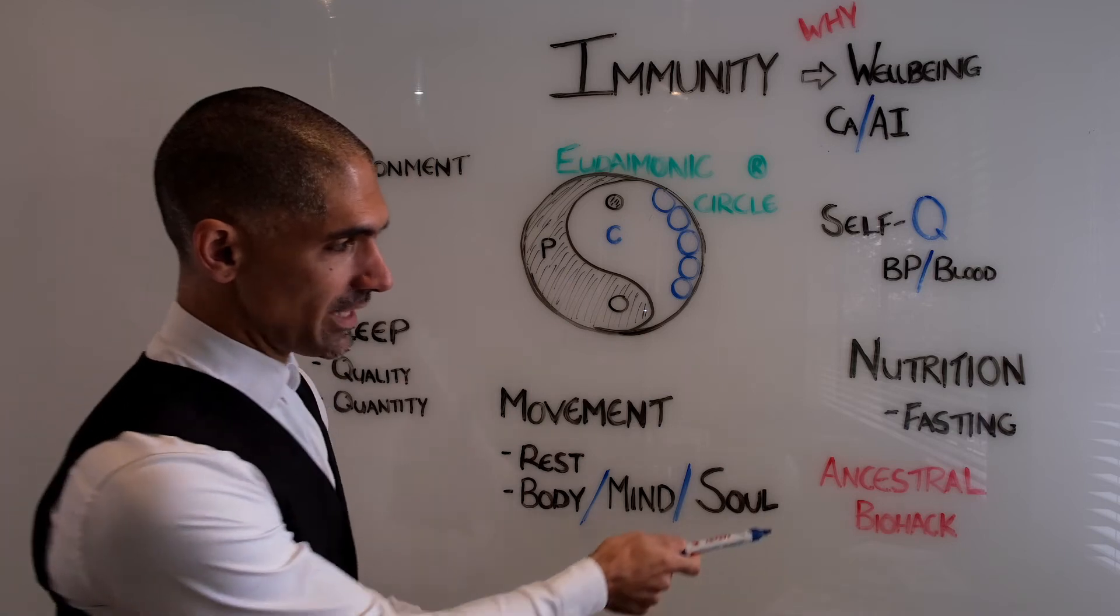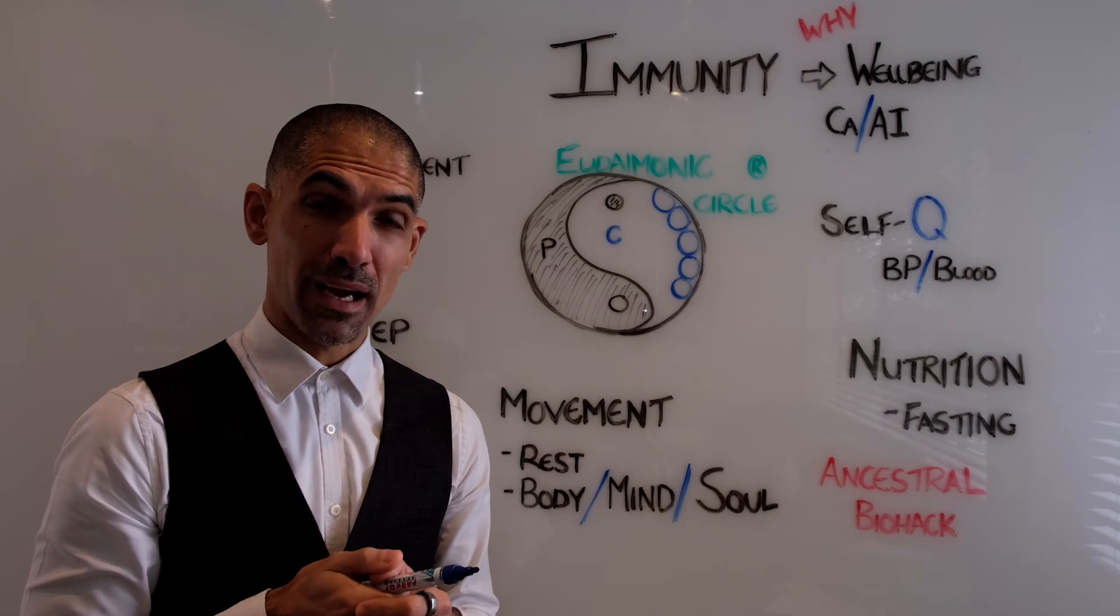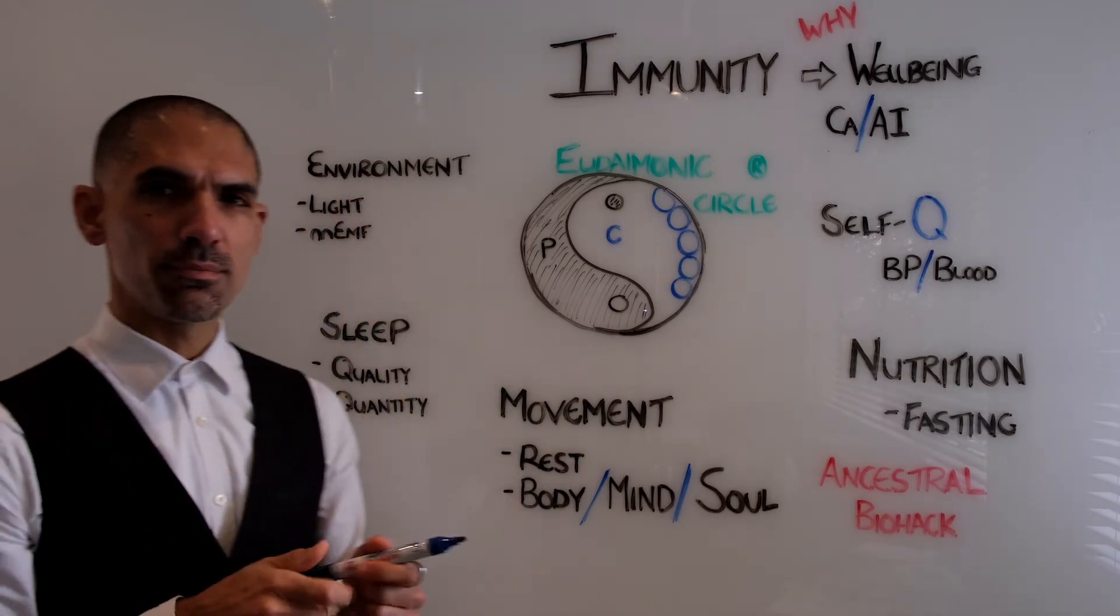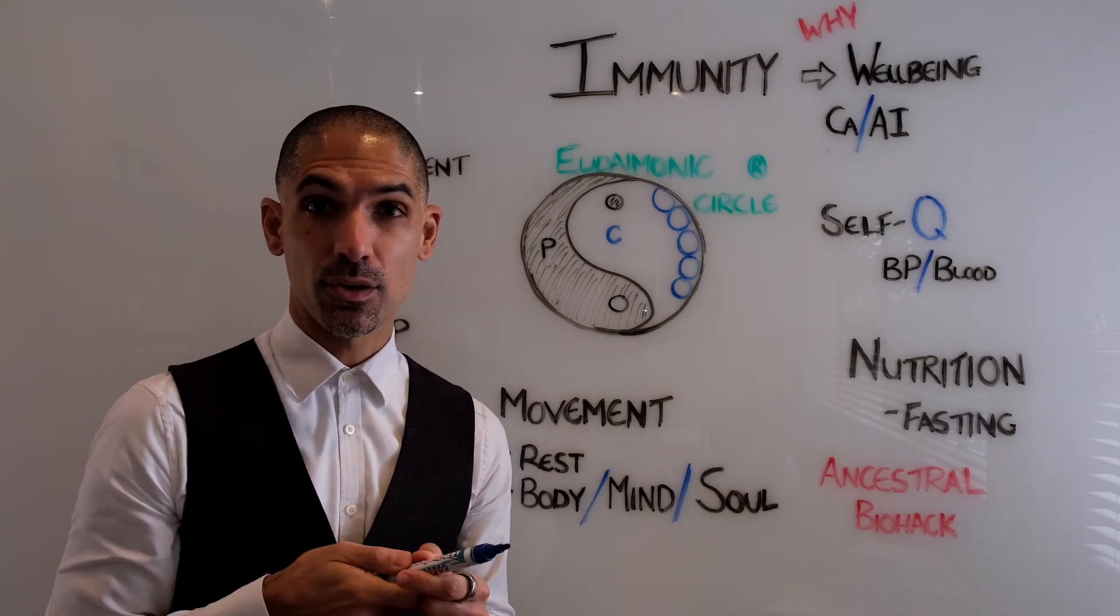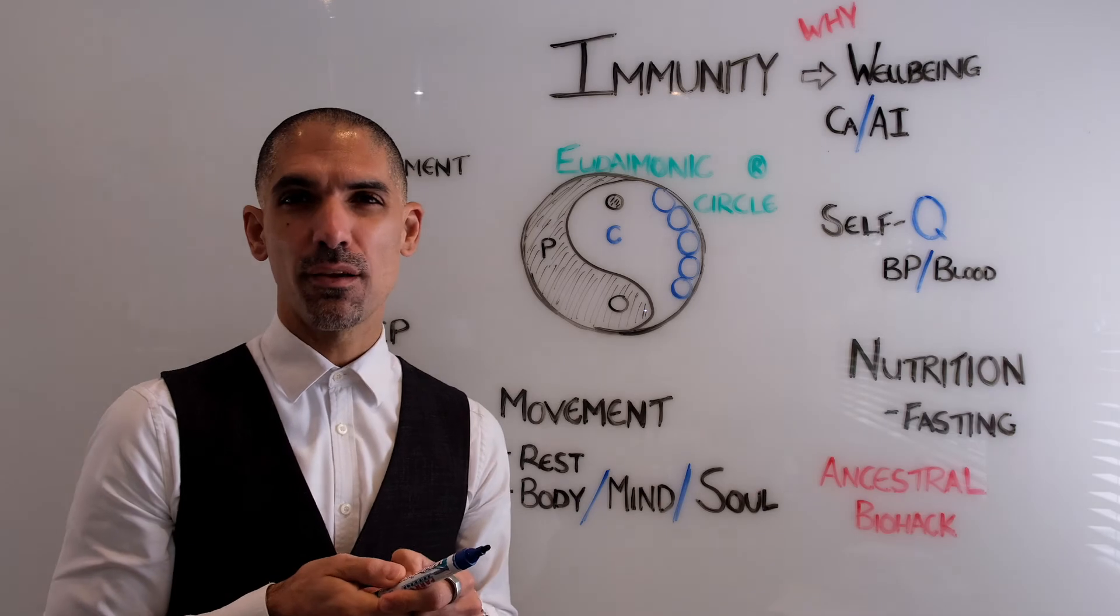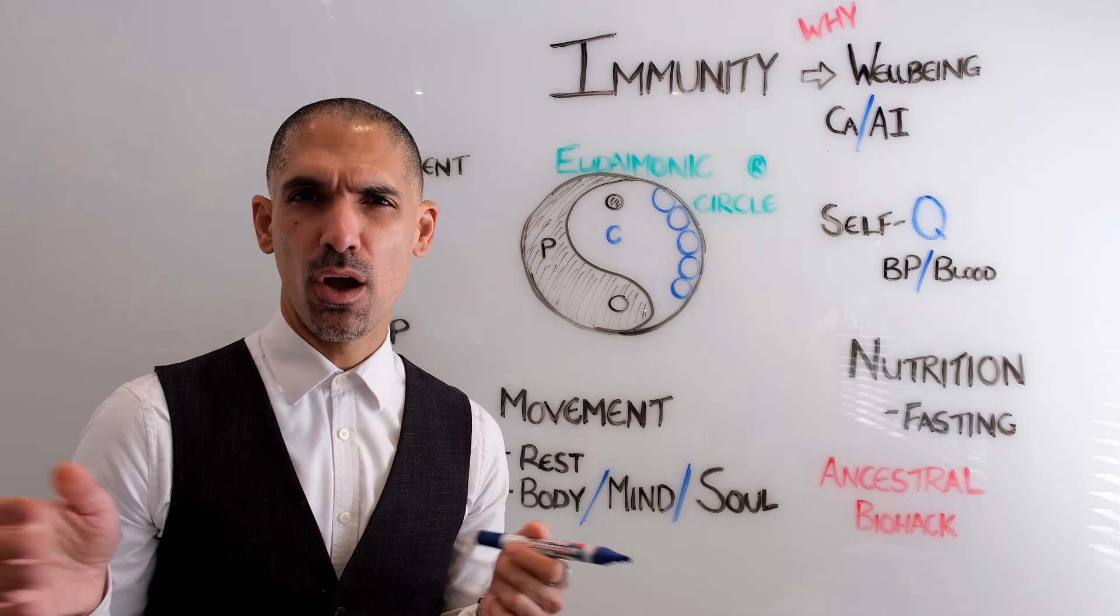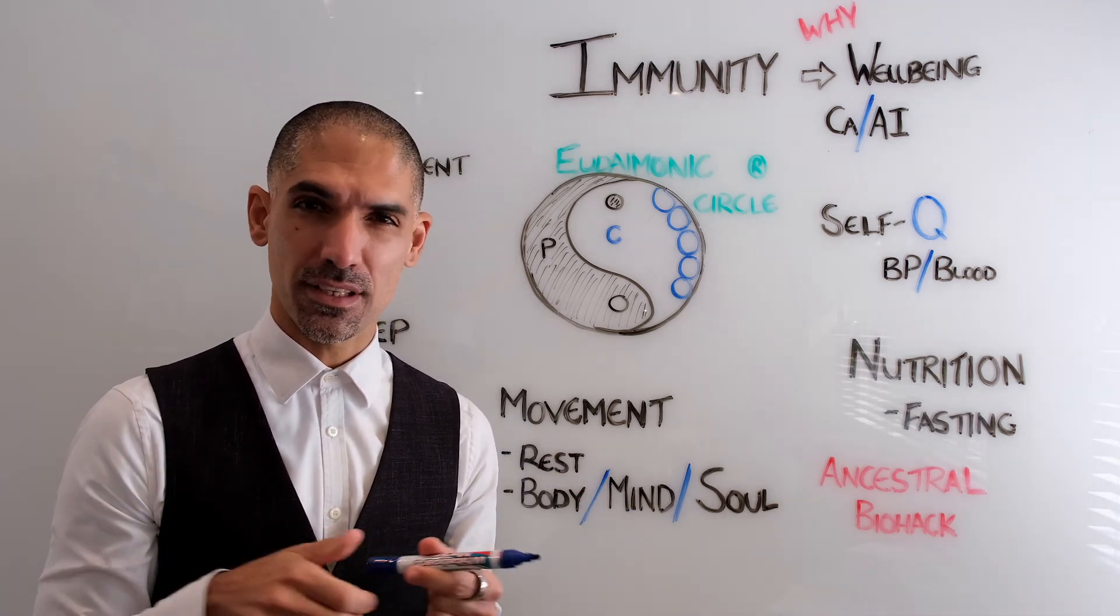The principles that we adopt are ancestral wisdom and modern biohacking. So for example on light, the most important is to get sunlight but if you're unable to get sunlight or be outdoors then this photo bio modulation or PBM in the form of infrared sauna or red light or infrared light panels that you can use.